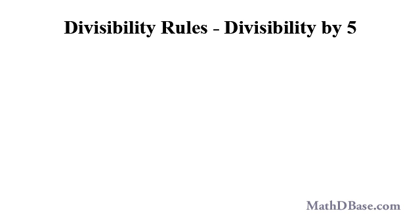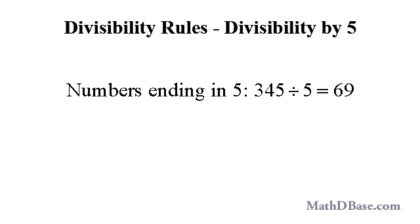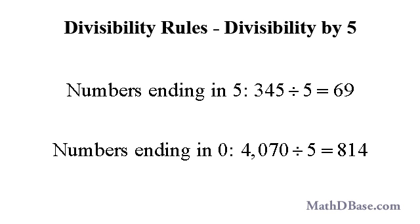Any whole number that ends in 5 or 0 is divisible by 5. If a number ends in 0, it means that the number is a multiple of 10, and tens are divisible by 5. For example, 345 divided by 5 equals 69, and 4070 divided by 5 equals 814.